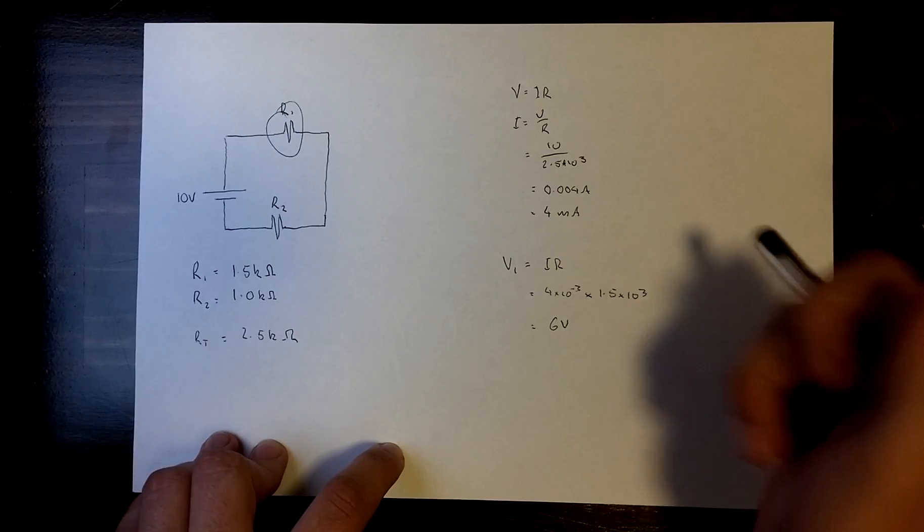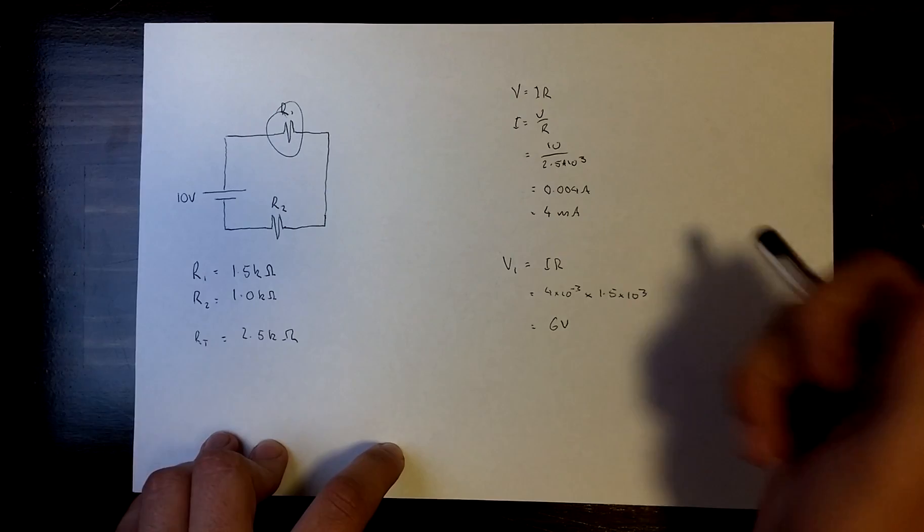That shows our voltage drop across this resistor. So as you can see it's quite easy to find our voltage. And we can do the same for resistance if we knew our current and our voltage, which just works the same way. So that would be R equals V over I.